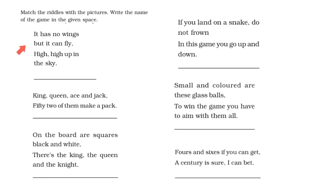The first riddle: It has no wings but it can fly high high up in the sky. Now I think, which thing has no wings but it can fly up in the sky? Kites have no wings but they can fly high high up in the sky. This riddle refers to the game flying kites.